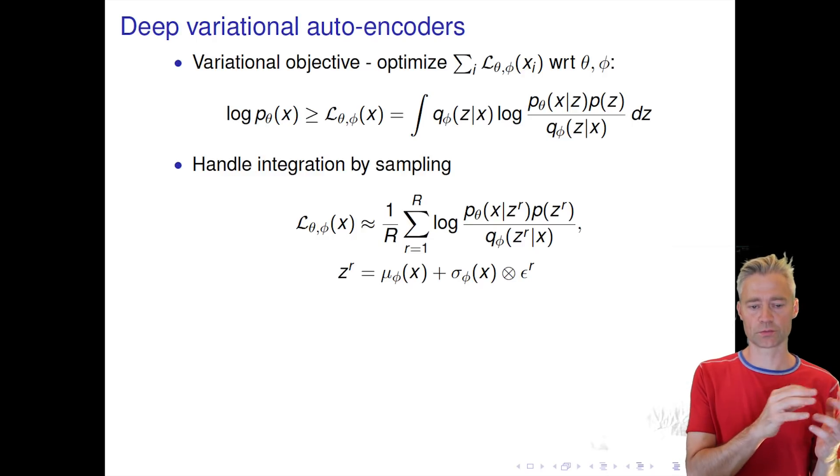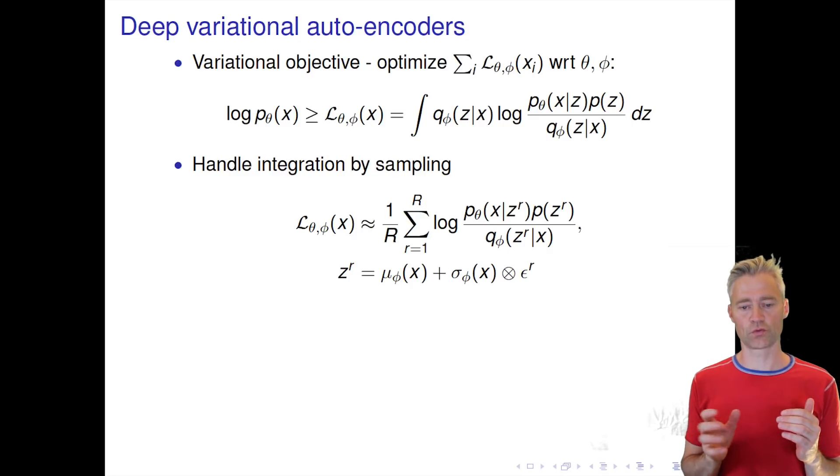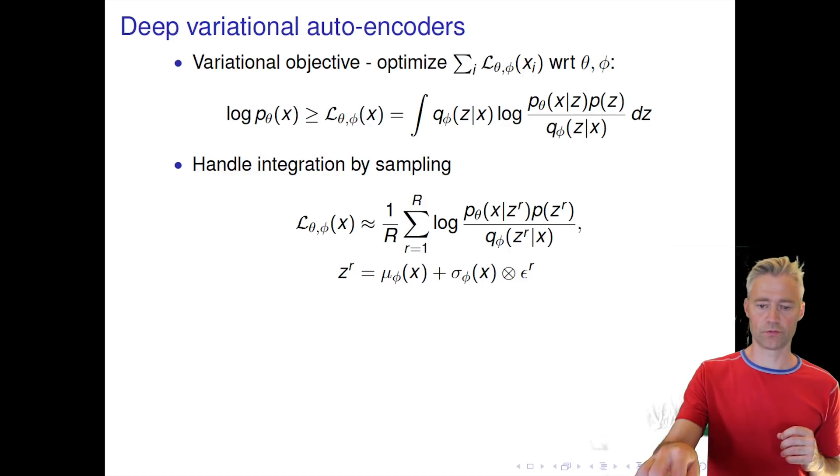This allows us to at the same time optimize the likelihood—make the probability of the observed data as large as possible when we optimize the generative model with parameters θ—and also make the bound as tight as possible by optimizing the variational distribution.